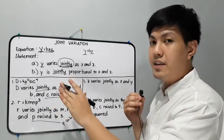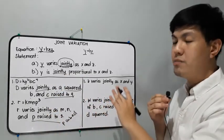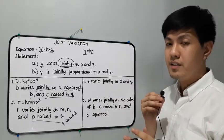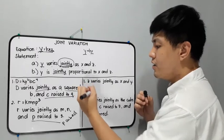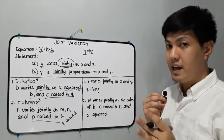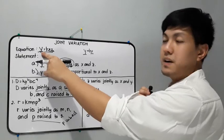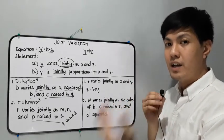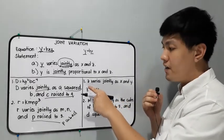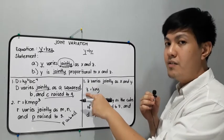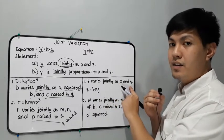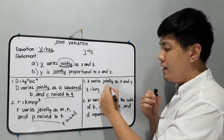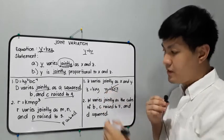Now let's translate from statement to equation. We have: 'z varies jointly as x and y.' Translated into an equation, it will be z is equal to kxy. The first variable mentioned in the statement — here it is z — becomes the isolated variable on one side. So z varies jointly as x and y gives us z is equal to kxy. Writing y is equal to kxz instead would be incorrect. This is the correct answer.